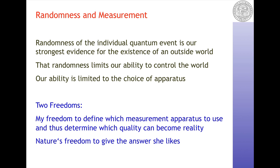What is actually interesting about the measurement problem is not so much the realization of a specific result, but the fact that if we obtain one result, we have erased the other possibilities — that is something which does not occur in classical measurement. That is a feature of our ability to compose the world. Our ability, as I see it, is limited to the choice of apparatus — the freedom of the experimentalist to define which measurement apparatus to use, and thus to determine which quality can come to reality, like position or momentum or path or interference.